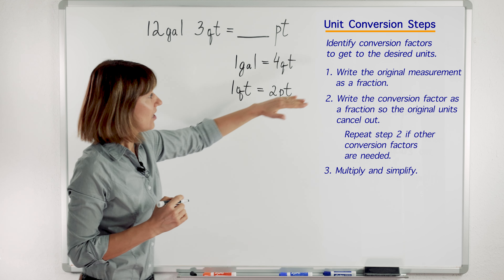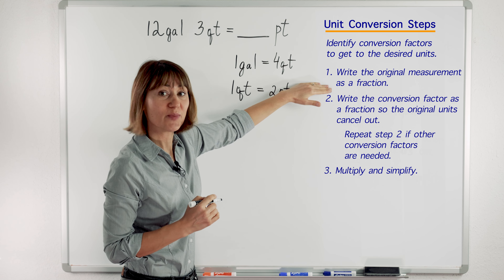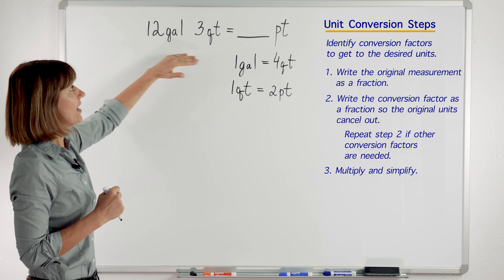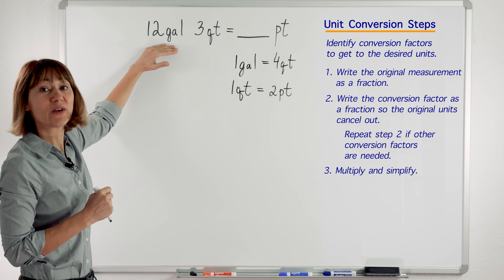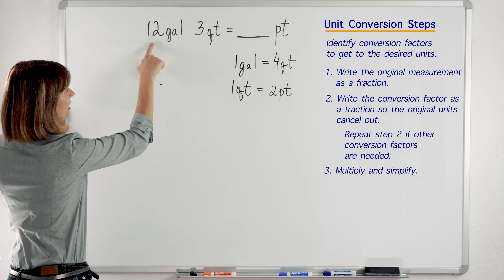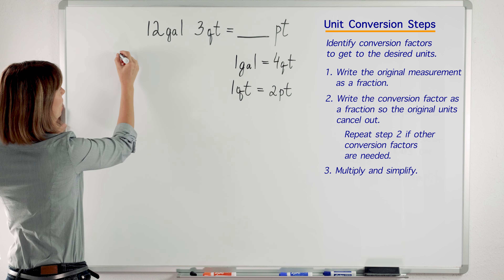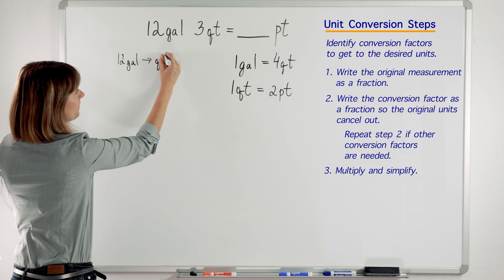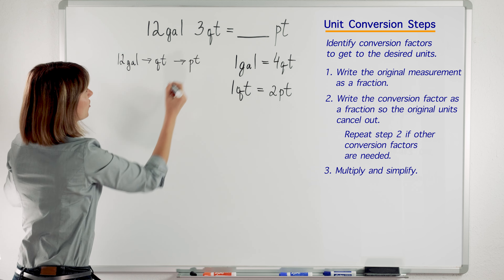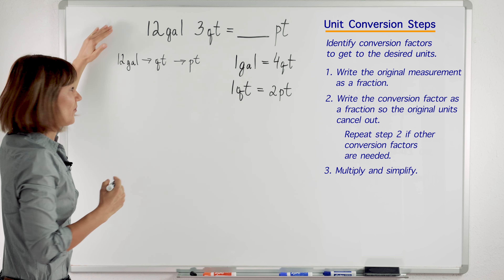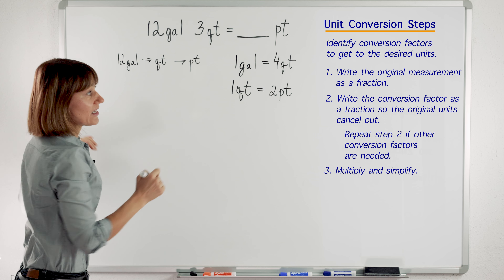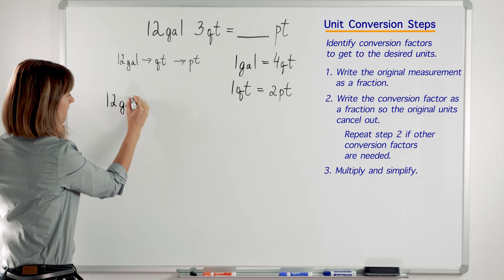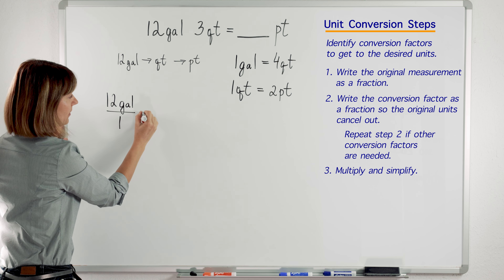Let's look at the steps. First, we need to write the original measurement as a fraction. We have two quantities here: 12 gallons and 3 quarts. Let's work with gallons first. We are going to change gallons into quarts and then pints — that is the first way of doing it. So, the first step tells us to write the original measurement as a fraction. We will write 12 gallons over 1 and prepare to multiply.